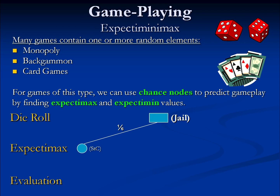If our player rolls a one, that player will end up on St. Charles Place. Assuming the property has not been purchased, the player has two choices: buy or not buy. Our player starts with $160, and any property is worth about its face value plus $30. St. Charles Place is priced at $120, so the player has enough money to buy it. If the player buys St. Charles Place, they end up with $150 worth of property and $40 in cash for a total of $190. If they choose not to buy, they keep $160 in cash. Based on our evaluation, it makes sense for the player to buy the property.